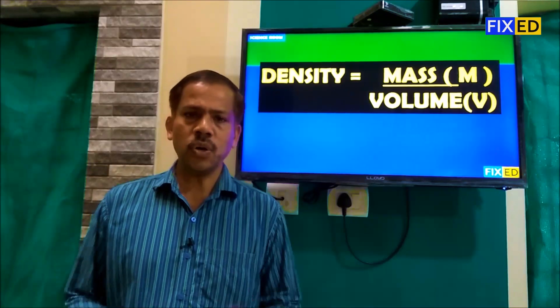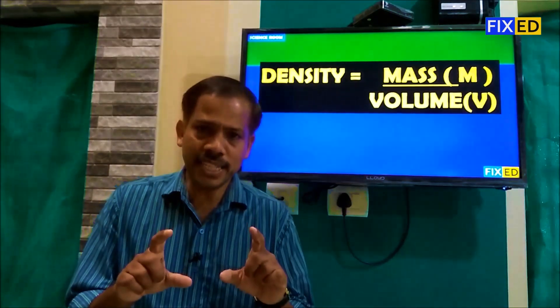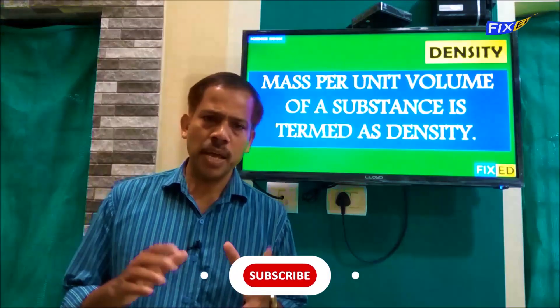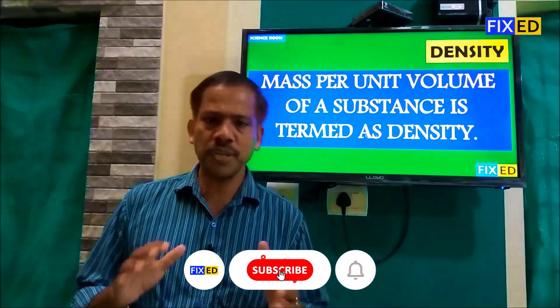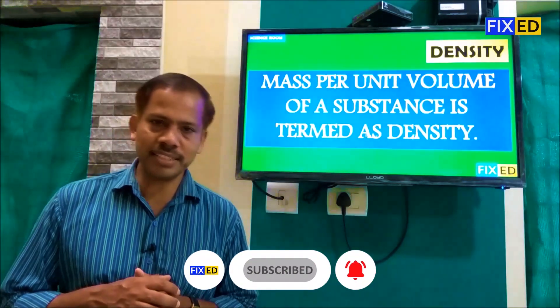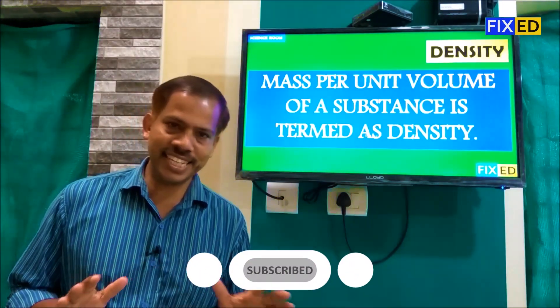So, density is equal to mass by volume. That is, mass per unit volume of a substance is termed as density.